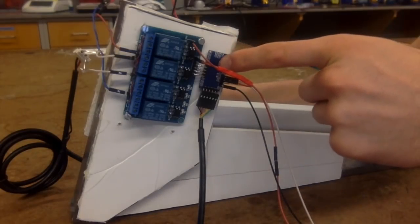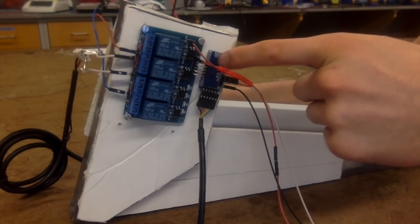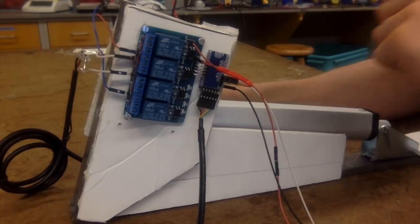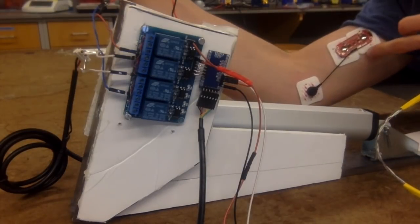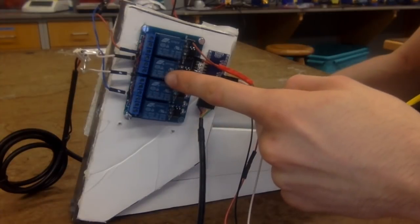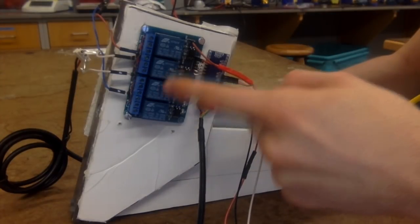Before we get into the build, let's go over how it works. This is an Arduino, which takes electrical signals from the myoelectric sensor, which is attached to the bicep. And by using this relay board, tells the arm whether it should bend or extend.